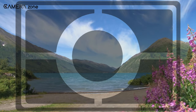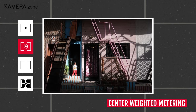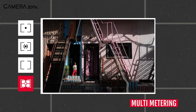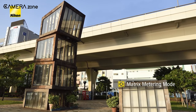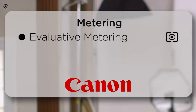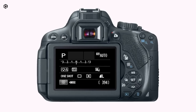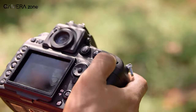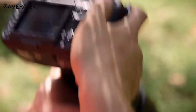That was all about the exposure metering modes used in almost all cameras. Though different brands use different names, they work in the same manner — for example, Nikon calls it matrix metering mode while Canon names it evaluative metering mode. Moreover, all these metering modes also work for both manual and automatic settings. So what exposure metering mode do you use more often? Let us know in the comment section.